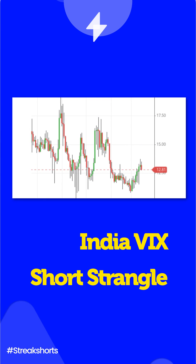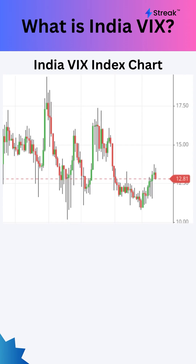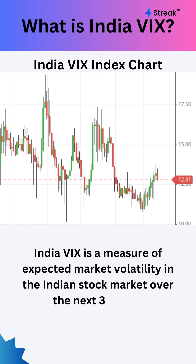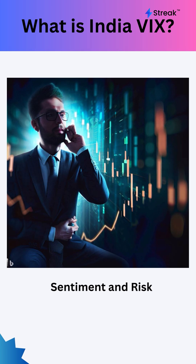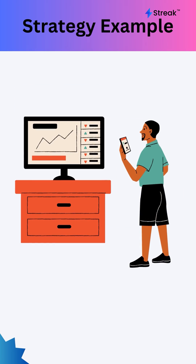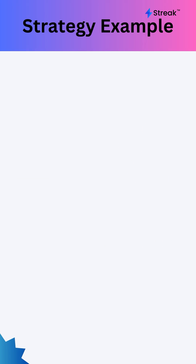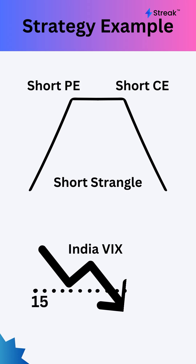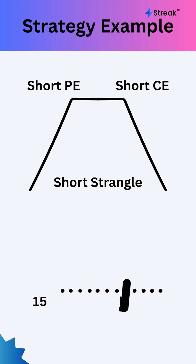Hello everyone. In this video we are going to learn how to create and backtest a short triangle strategy based on the India VIX Index. The India VIX is a measure of expected volatility of the Nifty 50 Index, and it is used as an indicator of investor sentiment and risk in the Indian stock market. Using a simple strategy, we'll learn how we can create and backtest an option strategy to create a short triangle position whenever India VIX crosses below 15, which indicates that the expected volatility is decreasing.